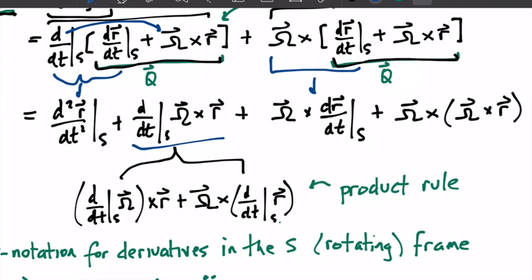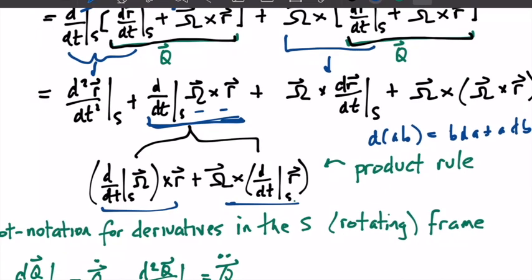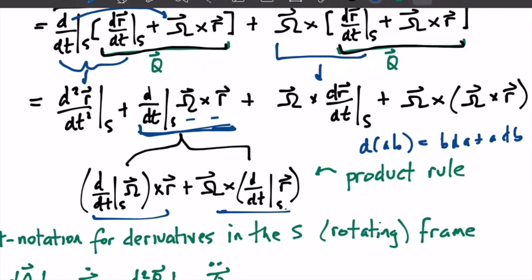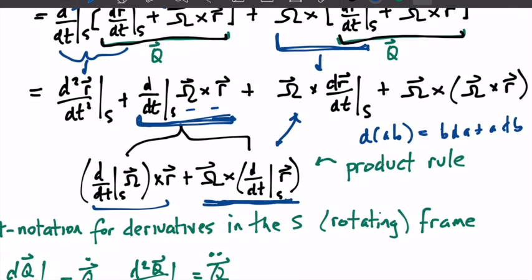We recognize that this bit right here is the time derivative of a product, so we can use the product rule: b·dA plus a·dB, where A is the angular velocity and B is this term. The derivative of the first vector cross the second gives us this term, and then we have the angular velocity cross the derivative of the second, giving this term. You will notice that we have this term from applying the product rule, but we also have exactly that same term from this other part — so we have two of these terms.